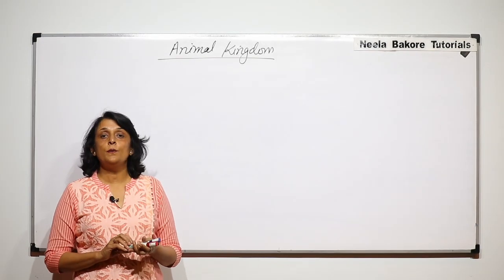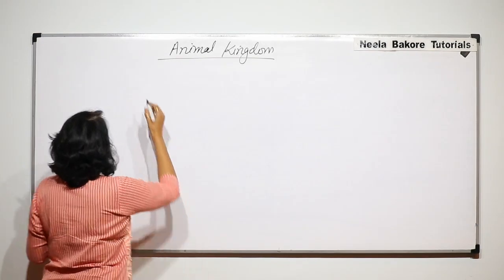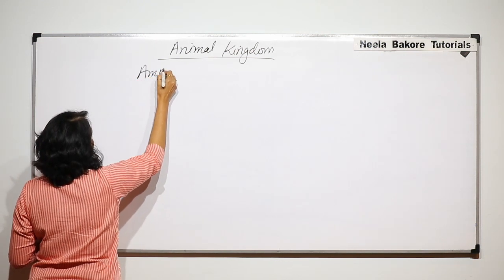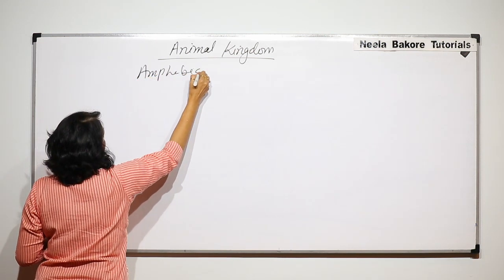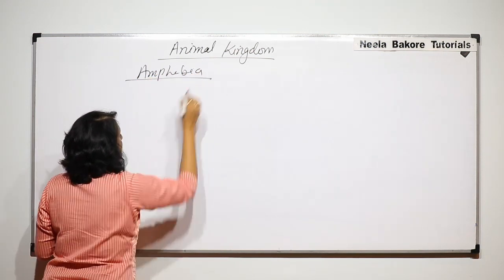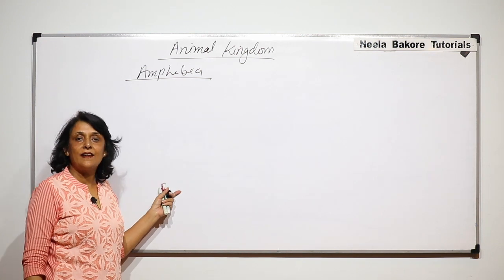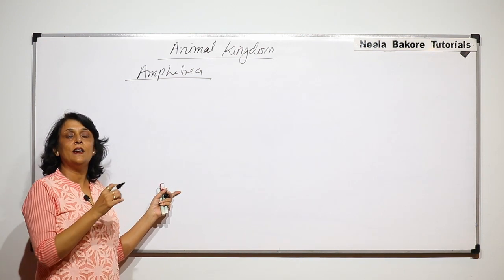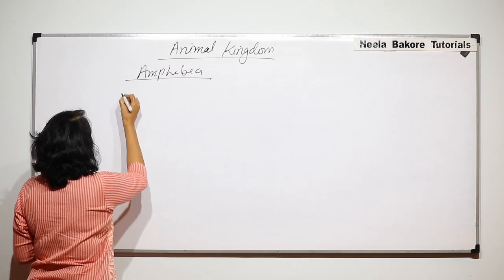We are now starting with another class, that is Amphibia. We will first discuss the general characteristic features and then we will come to some specific examples.